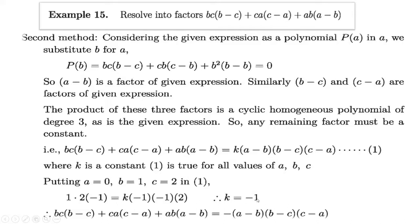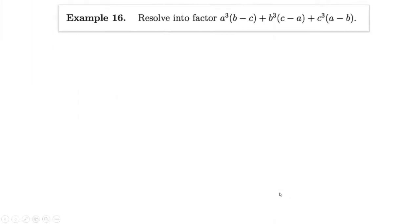Now put a = 0, b = 1, c = 2 in equation 1. Then you get the value of k = −1. Therefore the factorization of this expression is −(a − b)(b − c)(c − a).